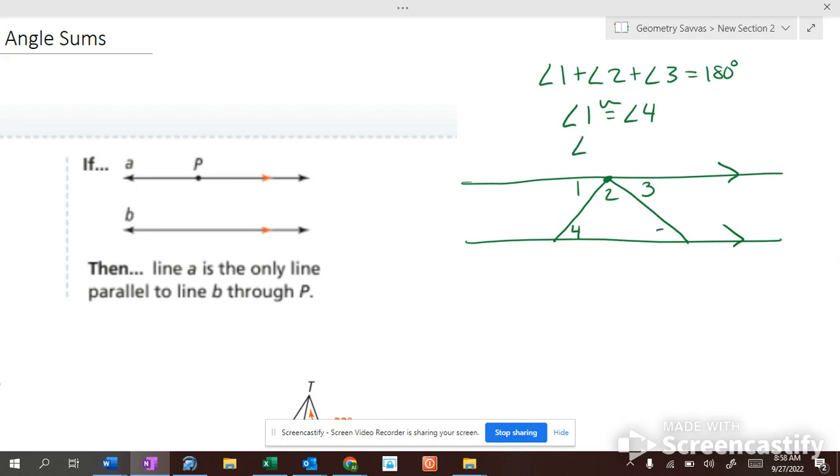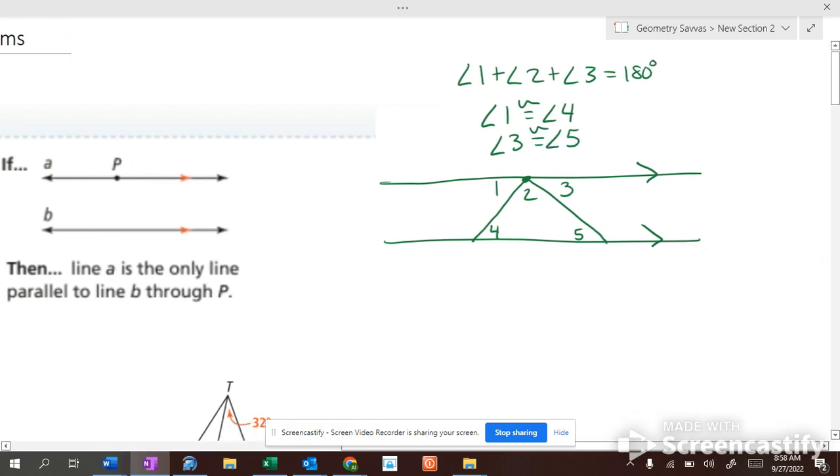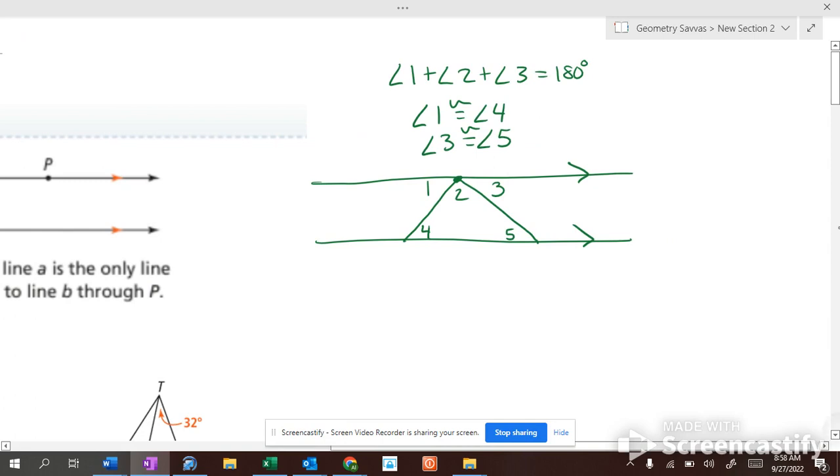What do I know about angles 3 and 5? They're alternate interior angles, so they are congruent. So, if I replace angle 1 with angle 4, and I replace angle 3 with angle 5, what do they add up to?